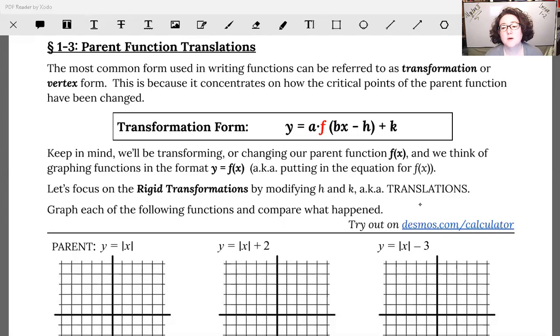So the most common form that we use when we're comparing these functions is something called transformation or vertex form. The reason it happens is because we concentrate on the individual constants, the numbers that we see in our equation compared to our basic parent function equation. We have this transformation form here: y = a·f(bx - h) + k. Keep in mind our typical function is y equals an expression or y equals f(x). If we take that original parent function and start throwing constants in different places we can start predicting what those graphs are going to look like.